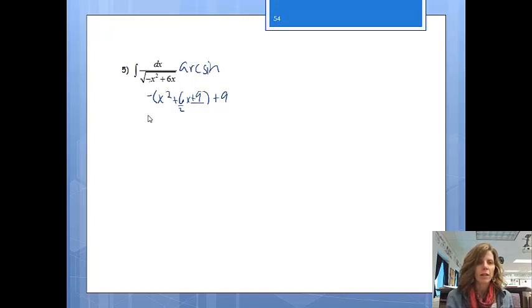And then, from here, when I go to rewrite this, this will be actually negative (x plus 3) squared plus 9. And then, from here, I'm just going to rewrite my integral. I have the integral of dx over the square root. I'm going to write the 9 first this time, so it'll be 9 minus (x plus 3) squared. And then, from here, this is an arc sine setup, so we just need to identify our parts.